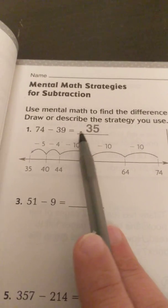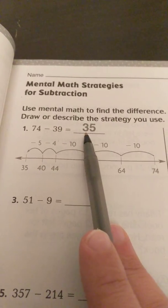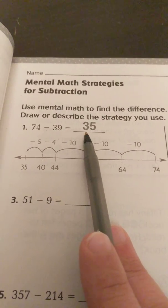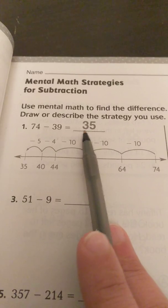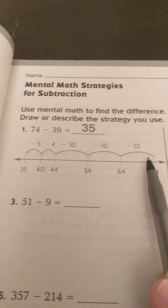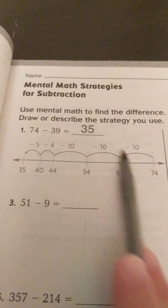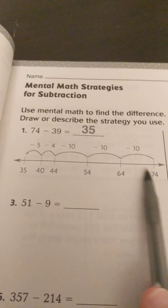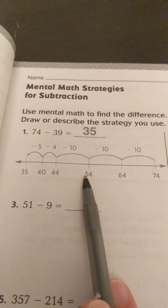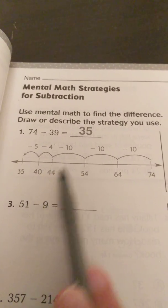And they decided to subtract the tens first. Honestly, whatever makes you feel comfortable is what you subtract first. But they took three tens, so they went from 74 to 64 to 54 to 44. So that's subtracting 30.